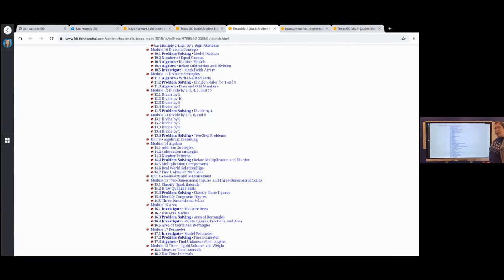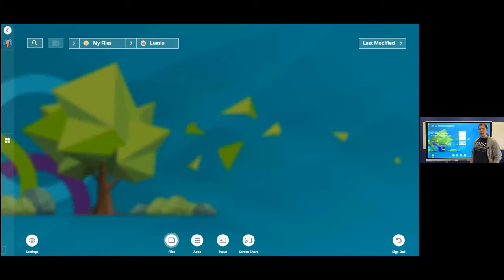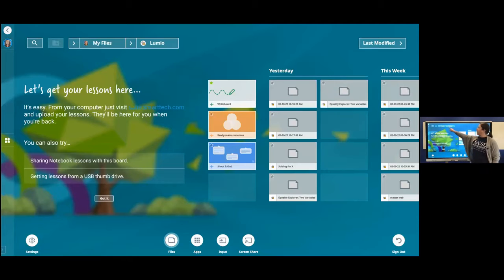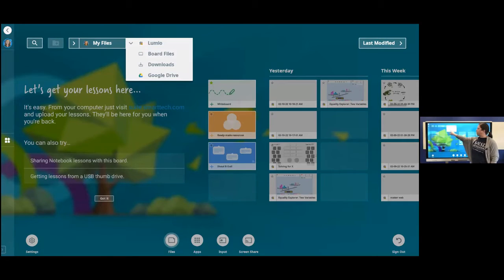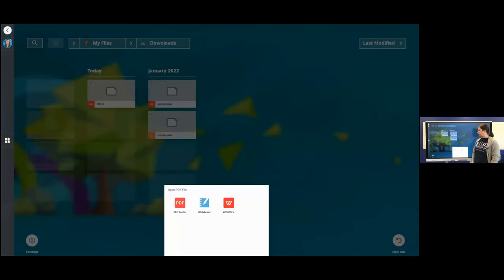On my board, I'm going to go back home. I'm going to select Files, and in the Files, I'll make sure I am in Downloads, and here is my download from today. When I touch it once, it opens into the whiteboard.